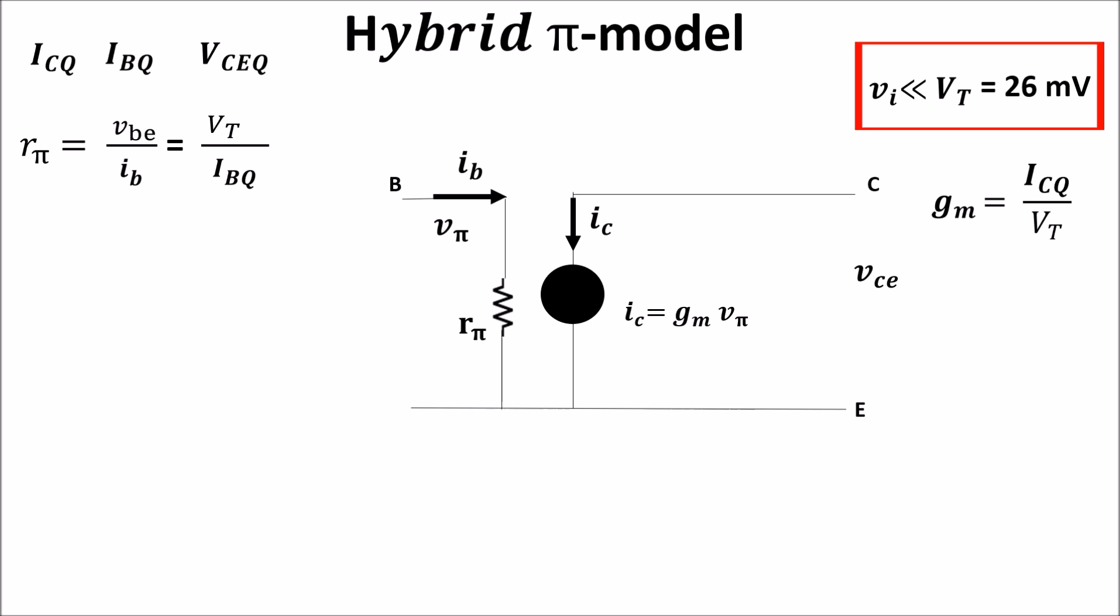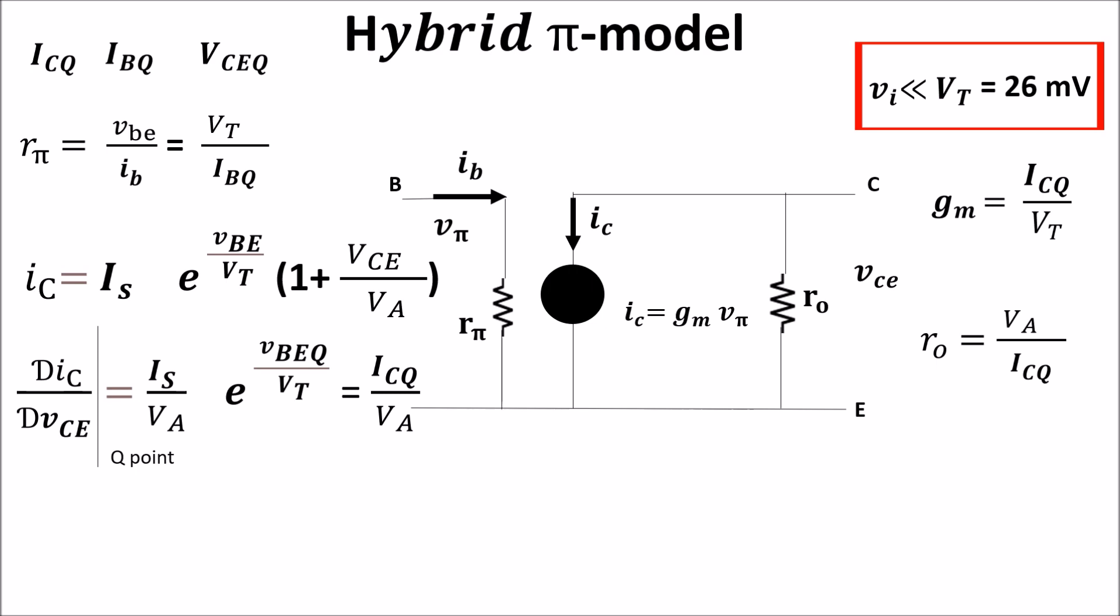So this is our pi model, but we can add the output resistance of the BJT. Remembering the early effect which relates the voltage VCE to collector current in this way, where VA is the early voltage. The derivation of the collector current with respect to VCE is this one.